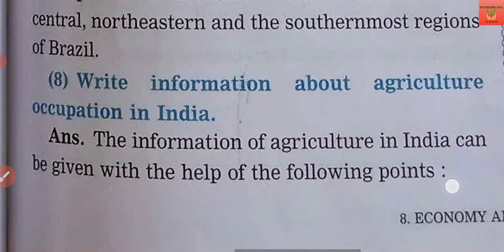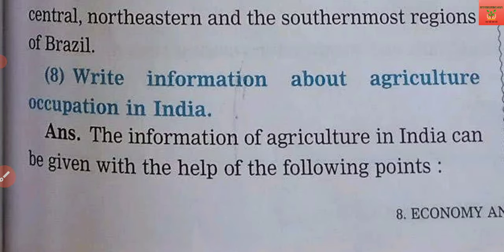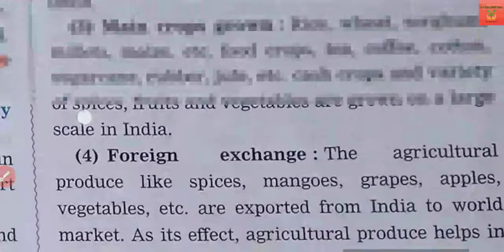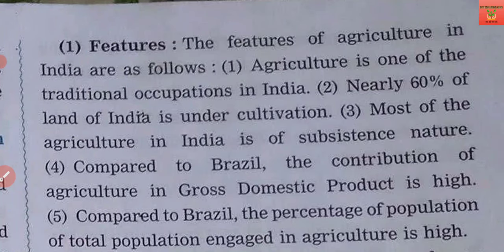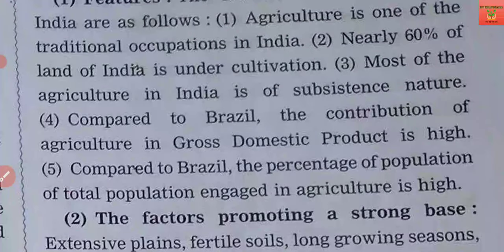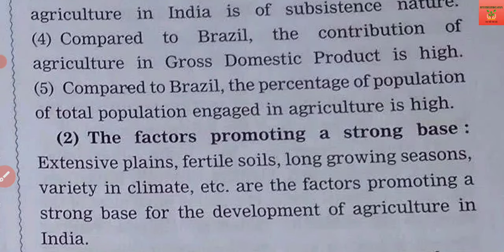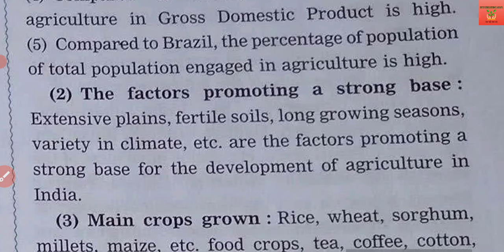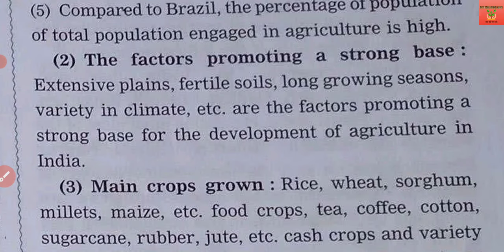Next question: how is agriculture the primary occupation in India? Agriculture is the primary occupation for the majority of the population. About 60% of land in India is cultivable. India's agricultural contribution to GDP is high, and a large proportion of the population is involved in agriculture. Factors that promote agriculture in India include: more plains suitable for cultivation, very fertile soil, long growing seasons, moderate rainfall, and a variety in climate.